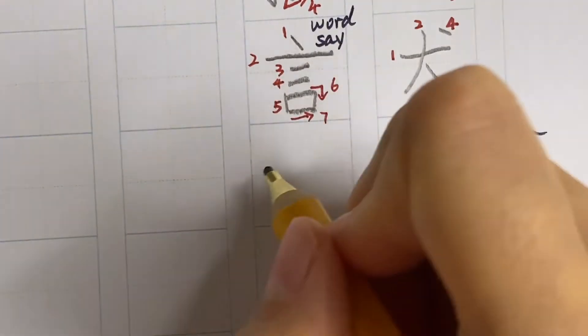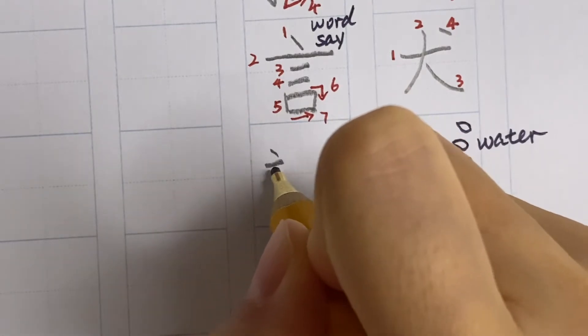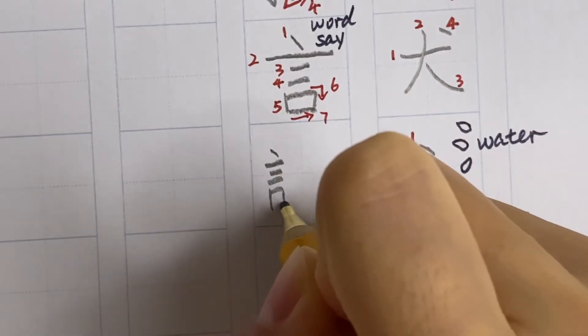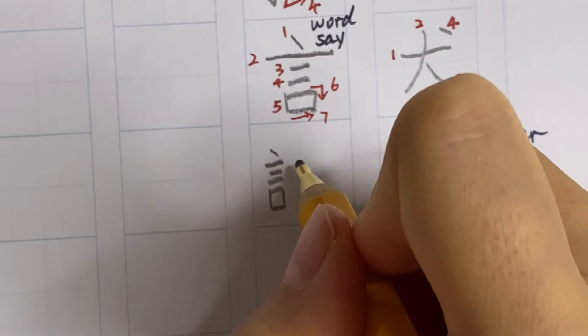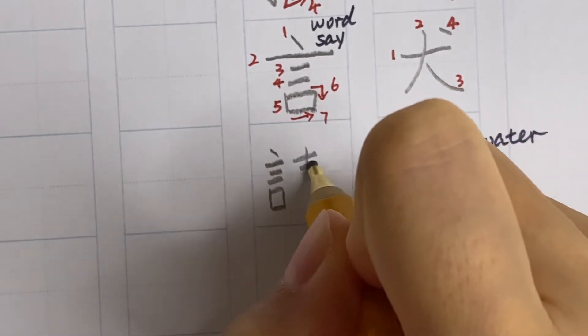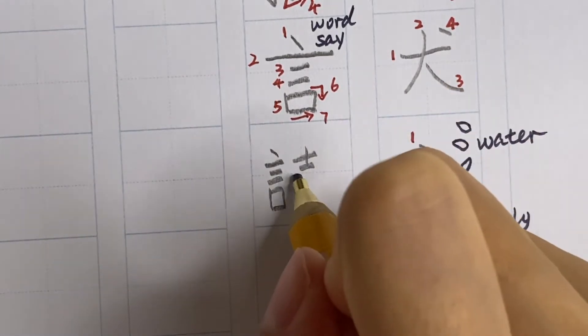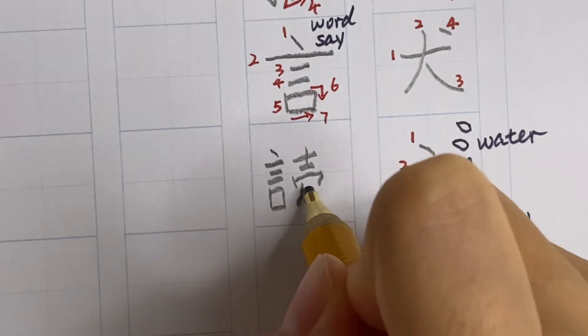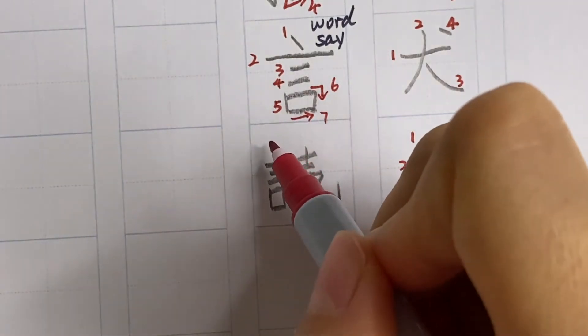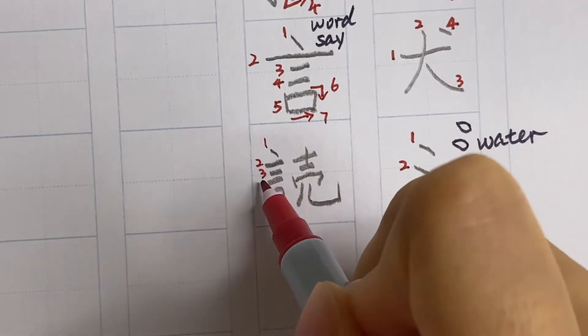In the box, the meaning for this kanji is word or say or sometimes even means language. When it's used as a radical, it's usually appeared on the left. Write a bit slimmer. Observe the right side, you can write in three parts: top, middle, and bottom, and follow the sequence.